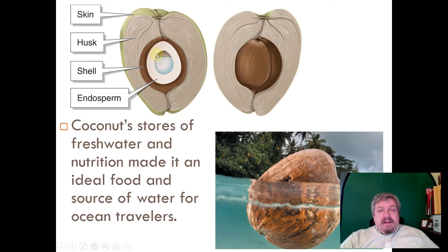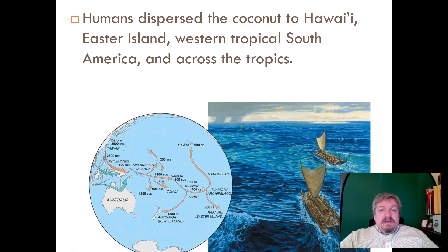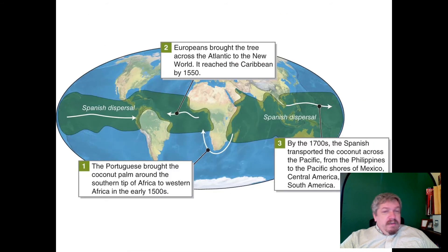What makes the coconut so well suited for dispersal is this: the outer shell is what we see — it floats — but inside is food, like a seed with nutrients, and there's water inside too. It's basically a big self-contained floating seed that can float for thousands of miles. Humans brought coconuts from New Guinea all the way to Hawaii and Easter Island, and Europeans later brought the tree to the Atlantic coast.